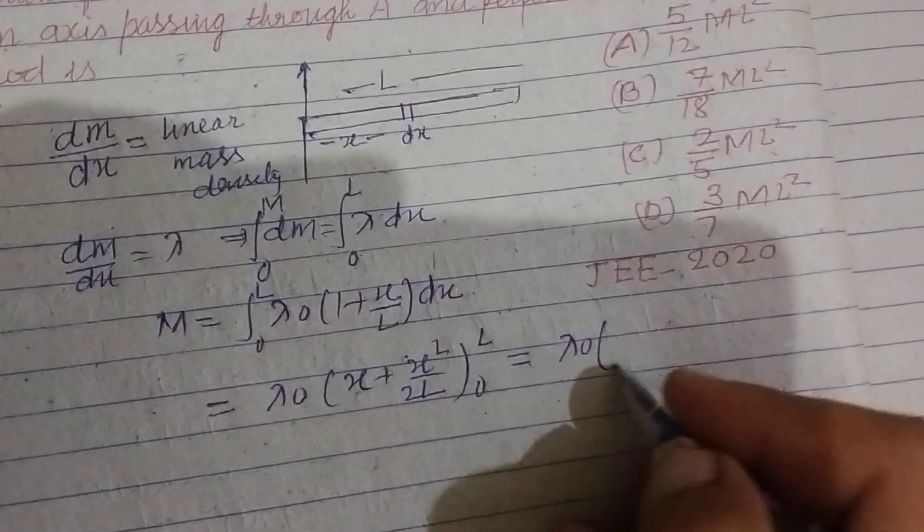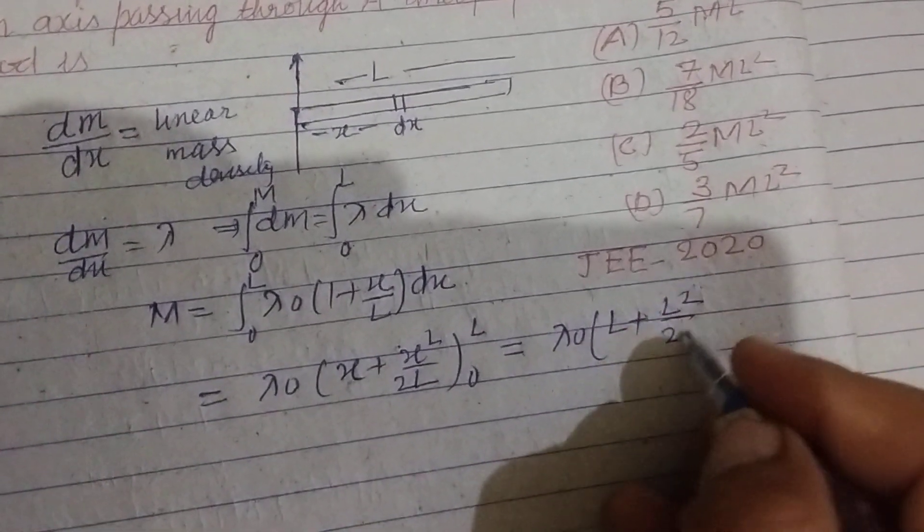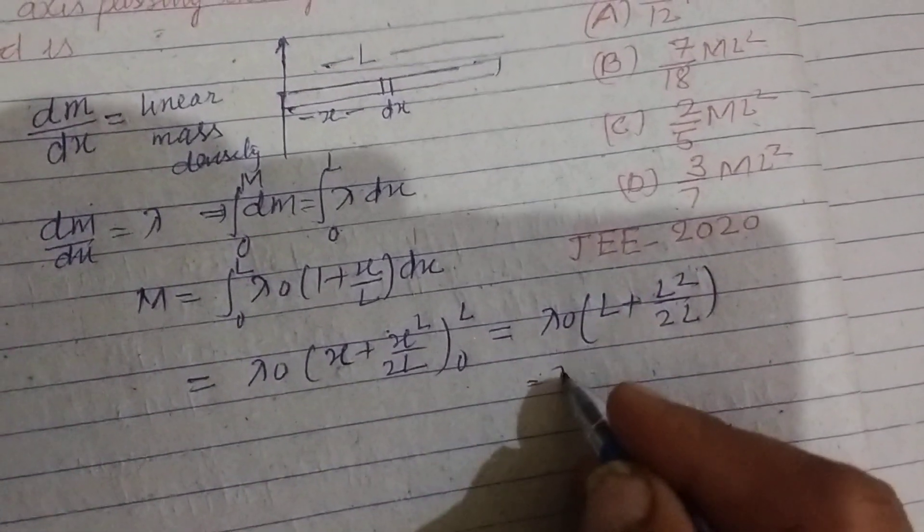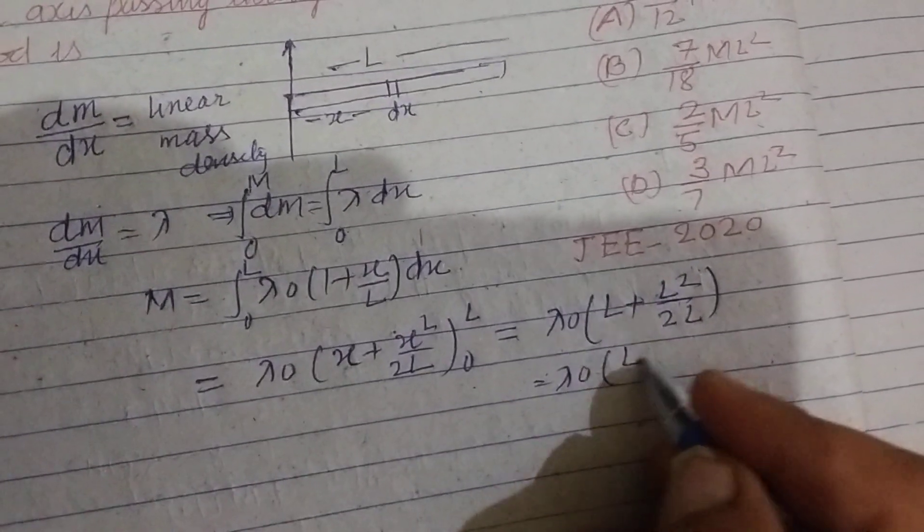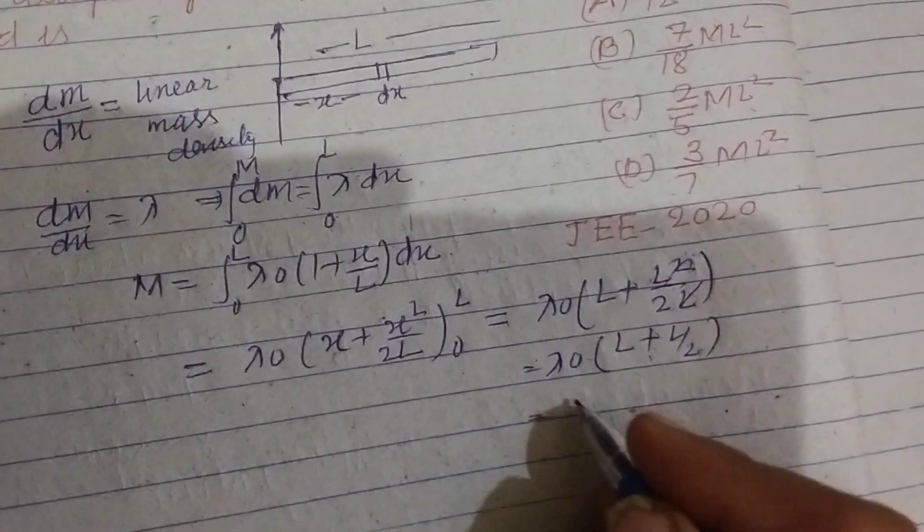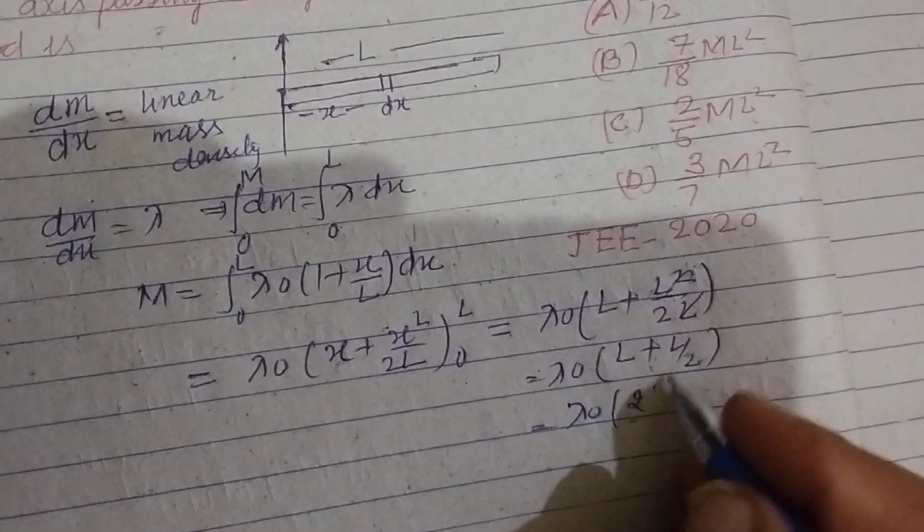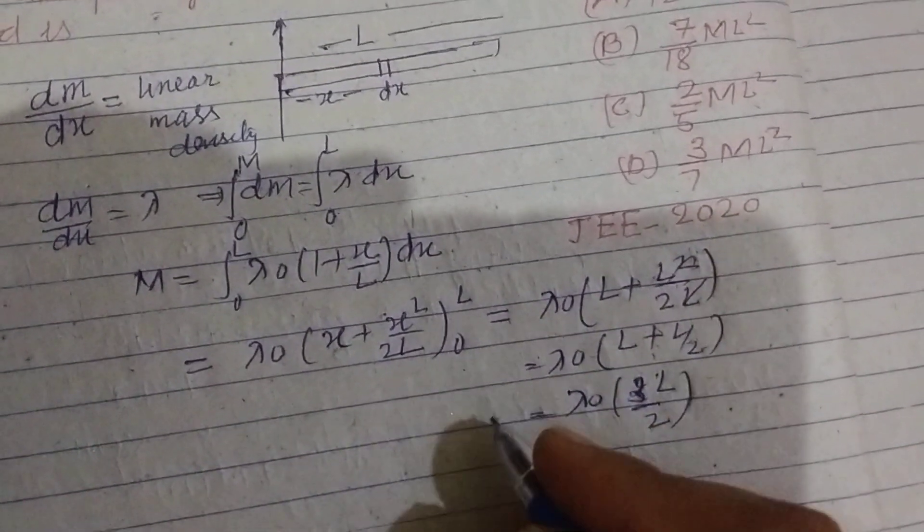So we got lambda naught L plus L square upon 2L. Or lambda naught L plus L by 2. Lambda naught times 2L plus L. This is 3L by 2.